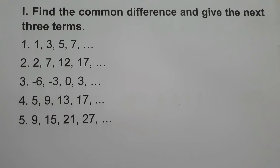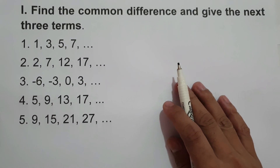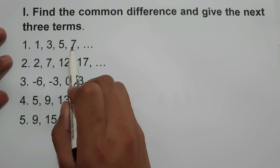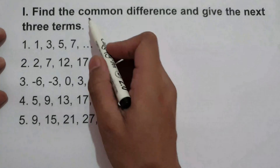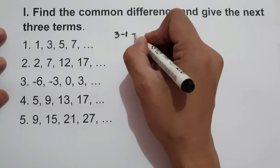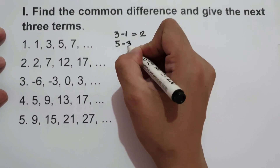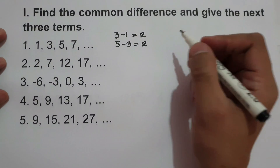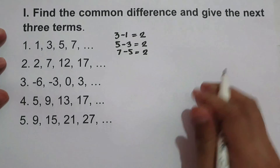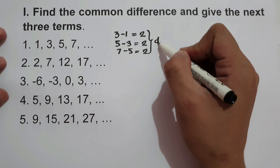Let's have an example. Find the common difference and give the next three terms of the given sequence. Number 1: we have the sequence 1, 3, 5, 7. First, let us find the common difference. We have 3 minus 1 is 2, then 5 minus 3 is 2, and 7 minus 5 is 2. So therefore, the common difference here is 2.